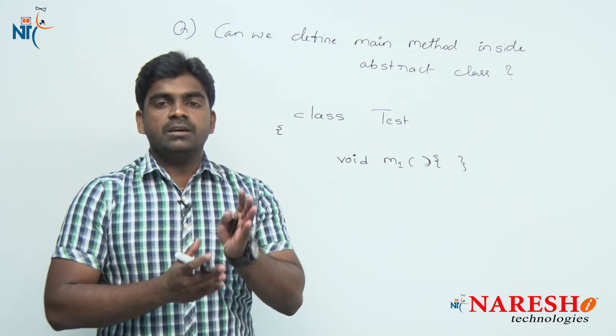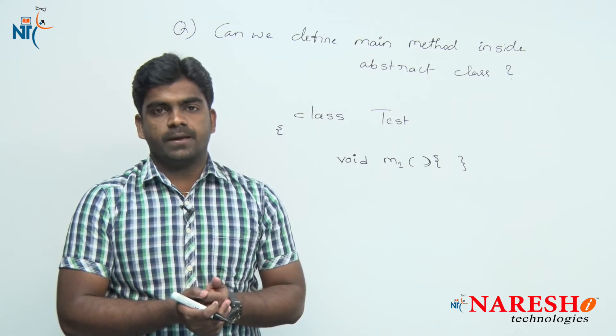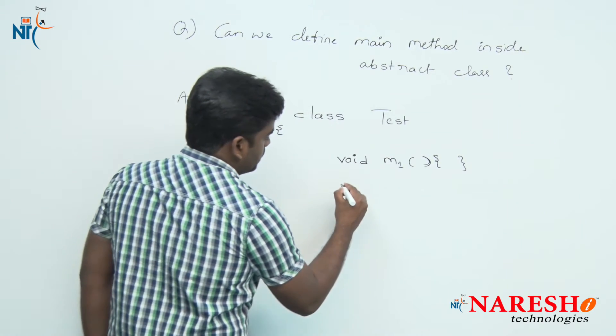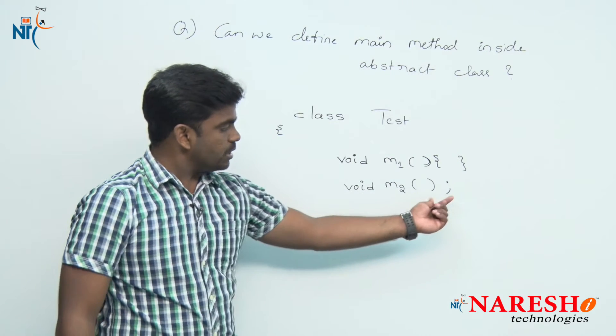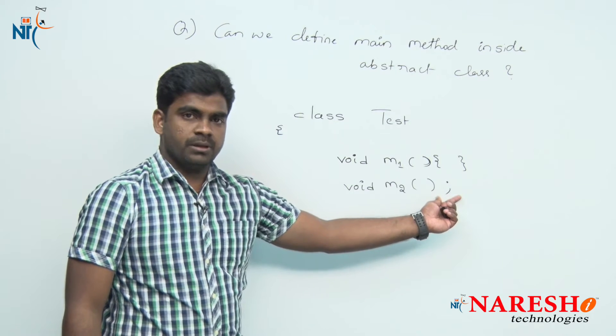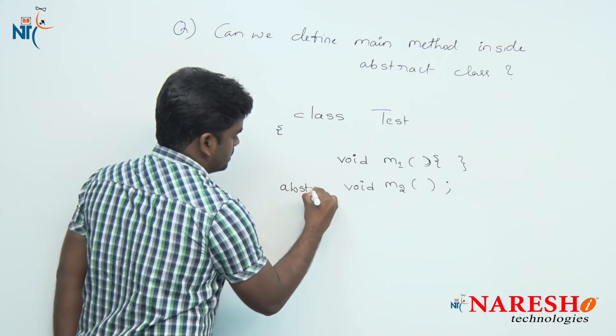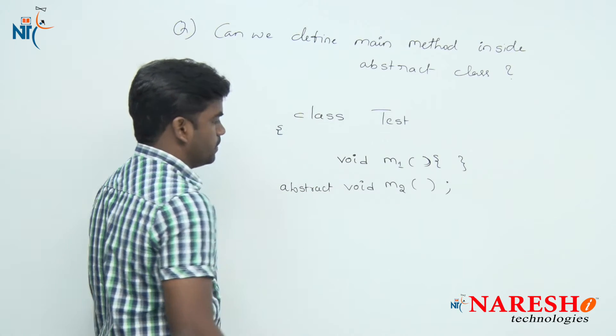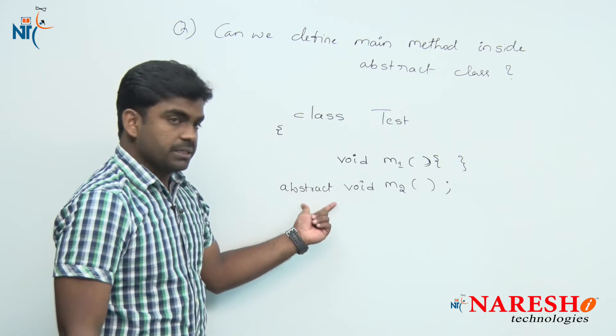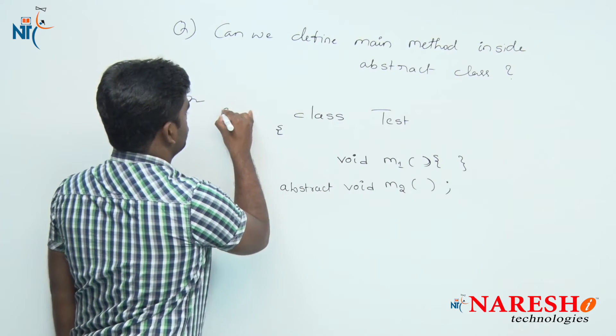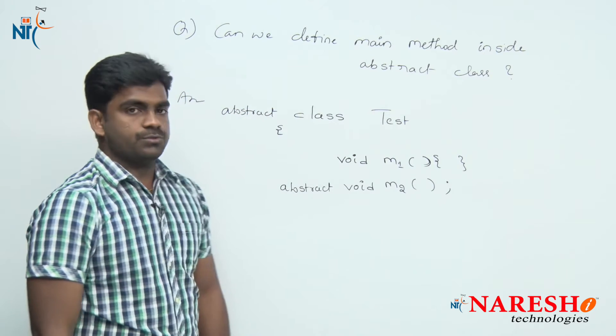Concrete method means the method which is having definition. For example, if you are writing any method and it is not defined, it is blank. Such type of methods we should define as abstract methods - no definition. If any class is having abstract methods, the class also you should define as abstract class.